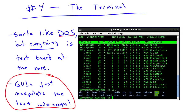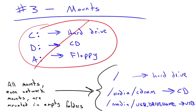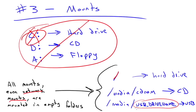Number 3: when you mount a hard drive, floppy, or CD — no more drive letters. It's not C:, D:, or A:. All mounted devices, whether USB drives, CD drives, or network mounts, are just going to appear as an empty folder. The forward slash is the root level where your hard drive is mounted. /media/cdrom is usually where your CD-ROM mounts, and /media/[drive name] is typically where USB drives are mounted.